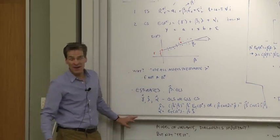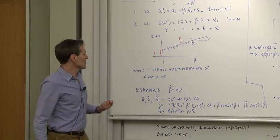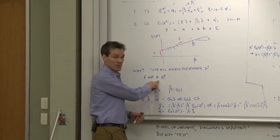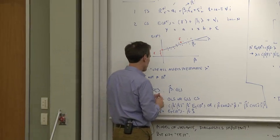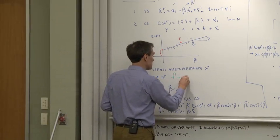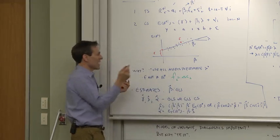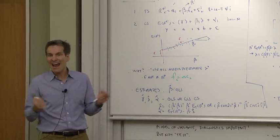So why would you do this rather than time series? Well, one reason you might do this is if the factor's not a return. For example, if the factor is equal to consumption growth, then you can't treat the factor as a return, so you have to do a cross-section.